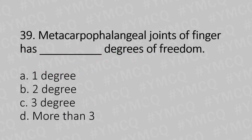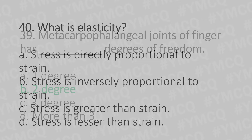Moving to our 39th question. The metacarpophalangeal joint of the finger has how many degrees of freedom? Option A: 1 degree of freedom. Option B: 2 degrees of freedom. Option C: 3 degrees of freedom. Option D: More than 3. And the answer is Option B: 2 degrees of freedom.